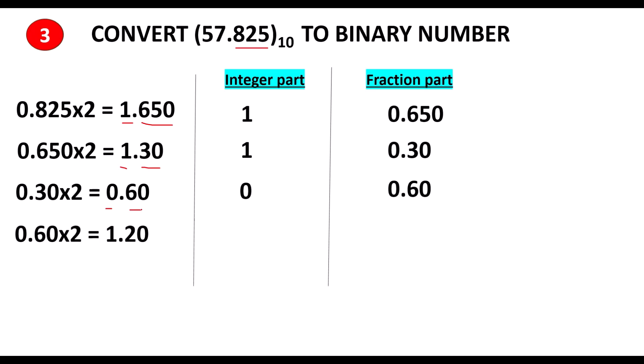Take 0.6 and multiply by 2: you get 1.2, so integer part is 1 and fraction part is 0.2. Take 0.2 and multiply by 2: you get 0.4, so integer part is 0 and fraction part is 0.4. This goes on repeatedly without end.